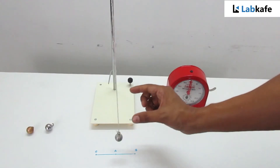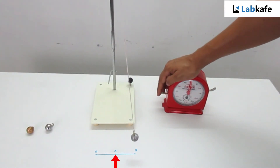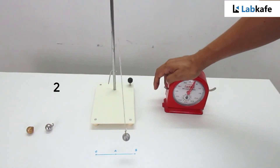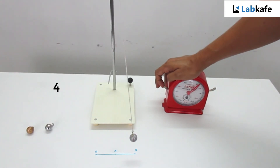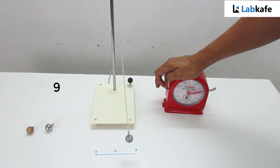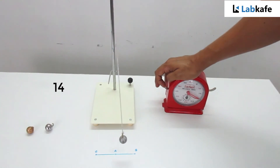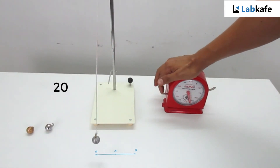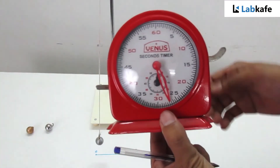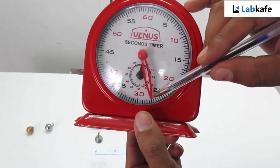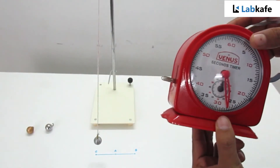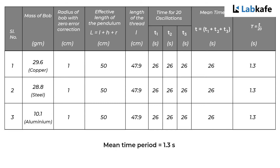Similarly, take the aluminium bob and observe the time taken for 20 oscillations. It is seen to be 26 seconds. Take two more readings and calculate the average. After calculating the time period for each of the bobs, it is observed that the time period is 1.3 seconds for each of them.